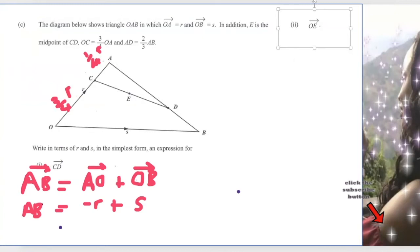So in other words AD is equal to two-thirds of what I have here. So it's two over three times minus R plus S.